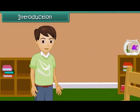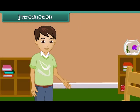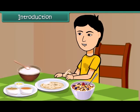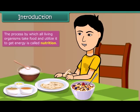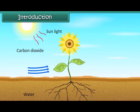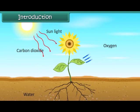Friends, as we all know, we need energy for performing various daily activities. We get this energy from the food that we eat. So we can say that nutrition is a process by which all living organisms take food and utilize it to get energy. Both animals and plants are living organisms. Like animals, plants also require energy for their life activities. Thus, nutrition is an important life process of all living organisms.